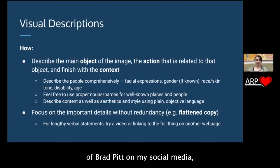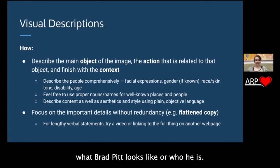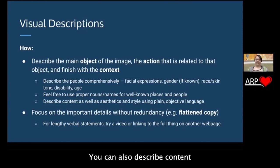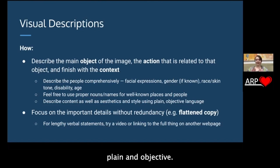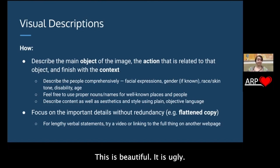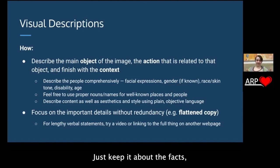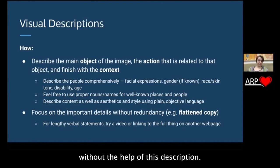You can use proper nouns or names for well-known places and people. If I have a picture of Brad Pitt on my social media, I don't need to explain what Brad Pitt looks like or who he is. You can also describe your content as well as the aesthetics and style, as long as you keep that language plain and objective. Don't try to project your opinions by saying 'this is beautiful' or 'it is ugly.' Just keep it about the facts, because that's what your audience can't access without the help of this description.